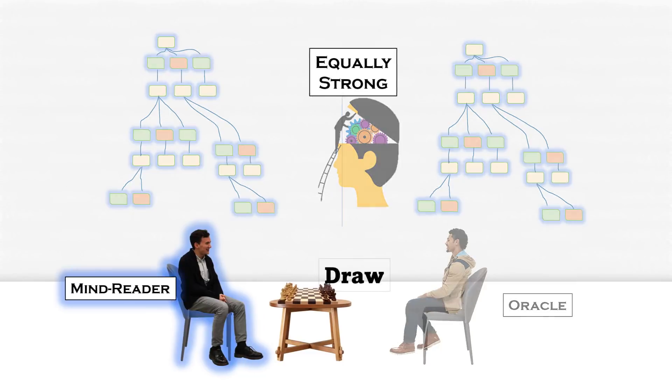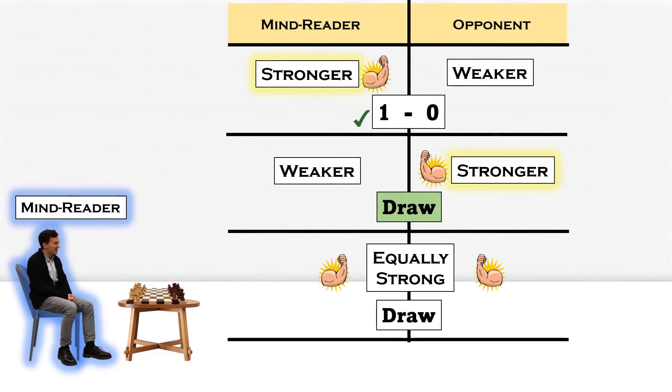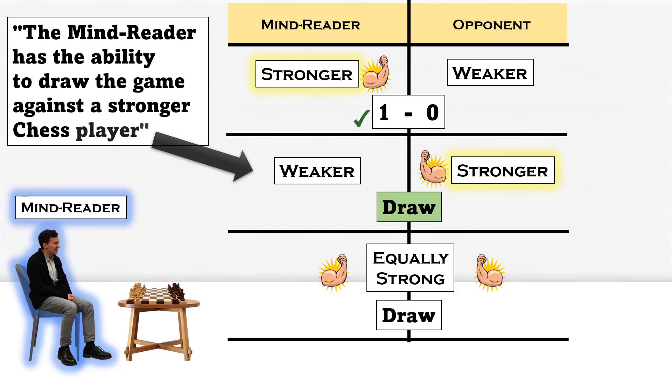So considering the supernatural ability of the mind reader, the possible game outcomes can be summarized as shown in the table. Using his supernatural ability, the mind reader has the ability to draw the game against a stronger chess player.